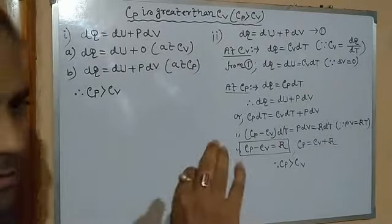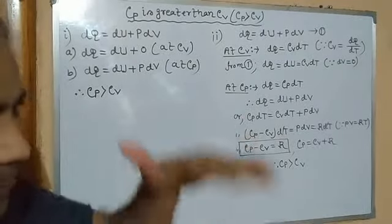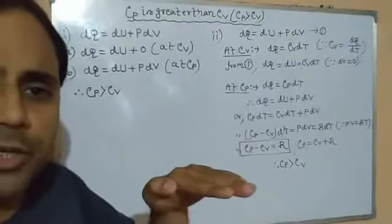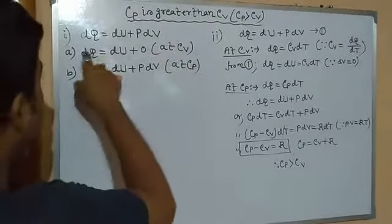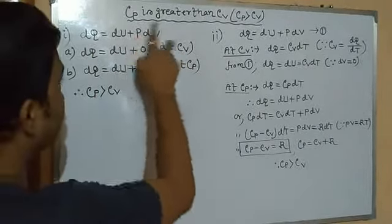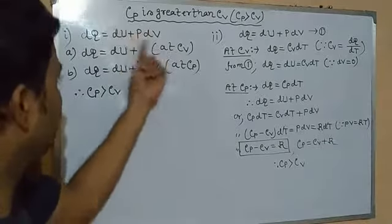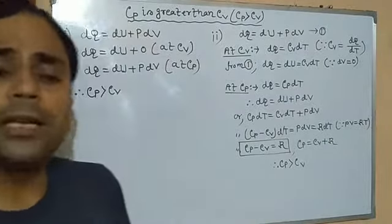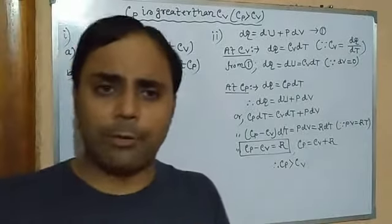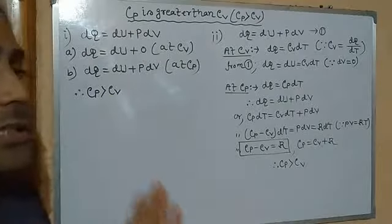If the gas is heated at constant volume, since the volume is kept constant there will be no change in volume. According to the first law of thermodynamics, DQ = Du, since DV = 0 and the PdV term becomes zero. This means the total supplied heat energy is used up only to increase its internal energy — that is, its temperature.